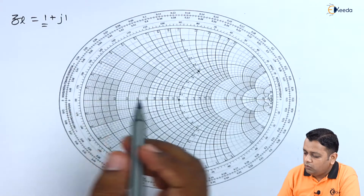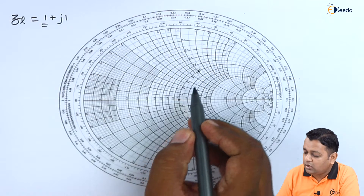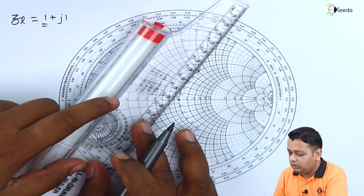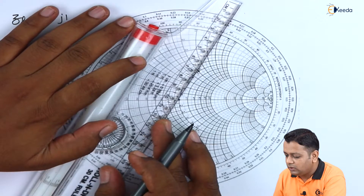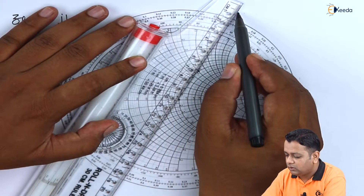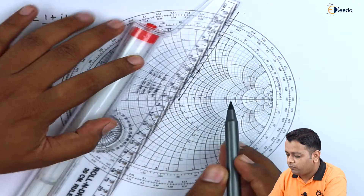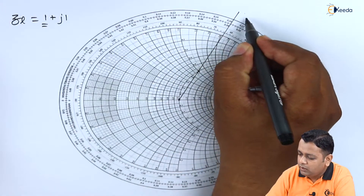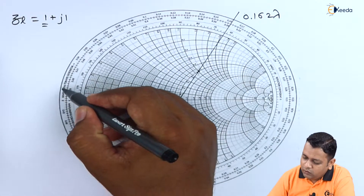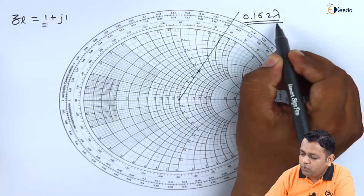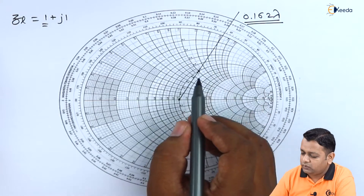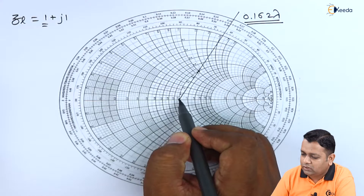We now connect the center of the Smith chart with the marked point for the load impedance. Joining these two points with a scale gives us the point on the marking of the outer circle. Here we come to have the value of 0.162 times lambda on the wavelength towards generator scale — we have 0.162 as the marking obtained by joining these two points. This is the load point connected with the center of the Smith chart.